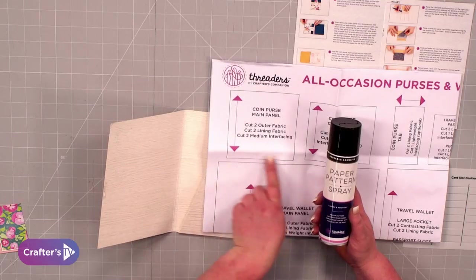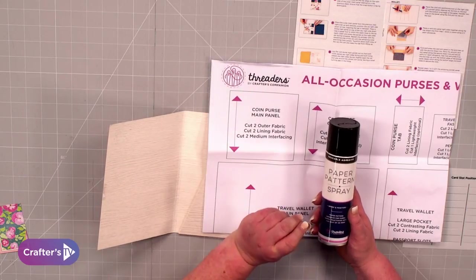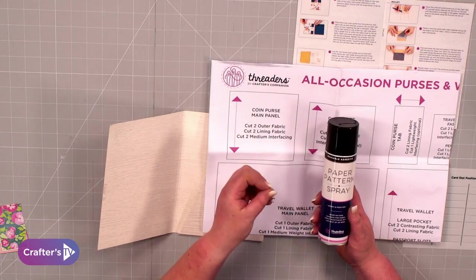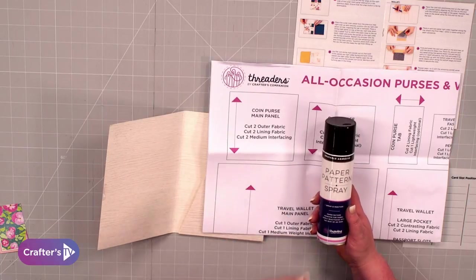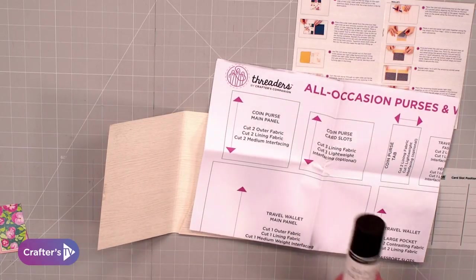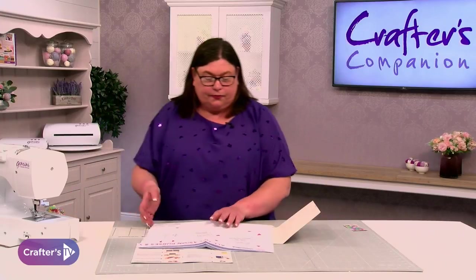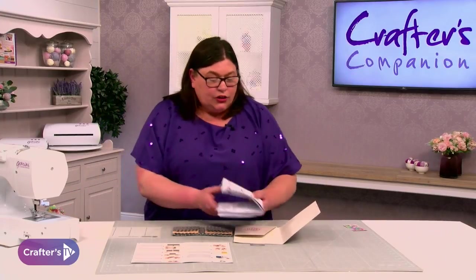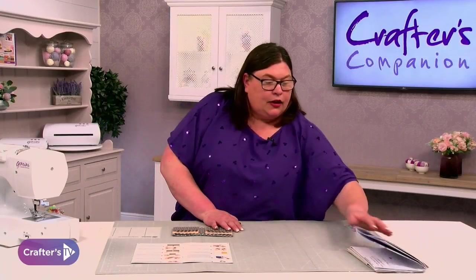Once you've heated it, the glue activates and temporarily sticks it to your fabric so you can cut around it. Then you can peel it off. It won't be sticky until you heat it again, but you can reuse it. Once you've got all your pieces cut out, you're going to start assembling.